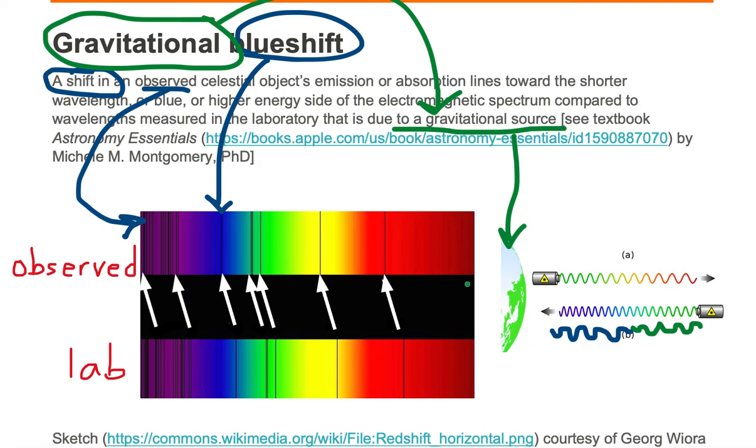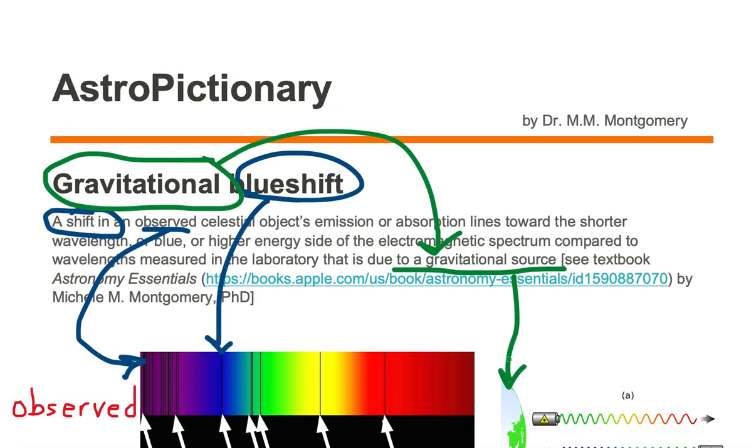Because the source is gravity, we call this a gravitational blueshift.